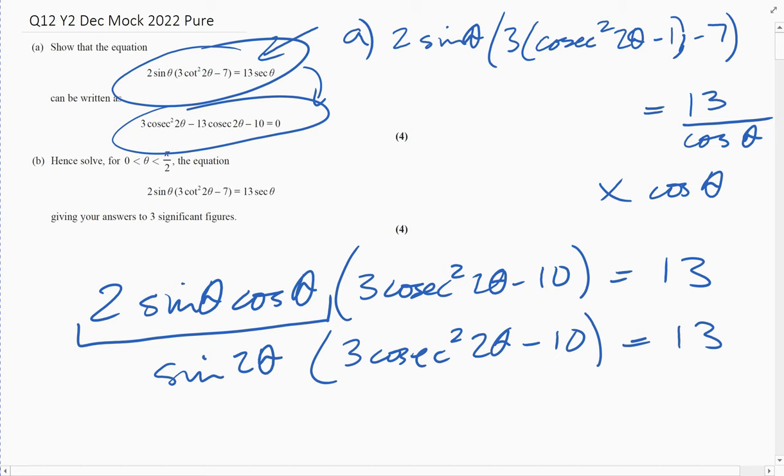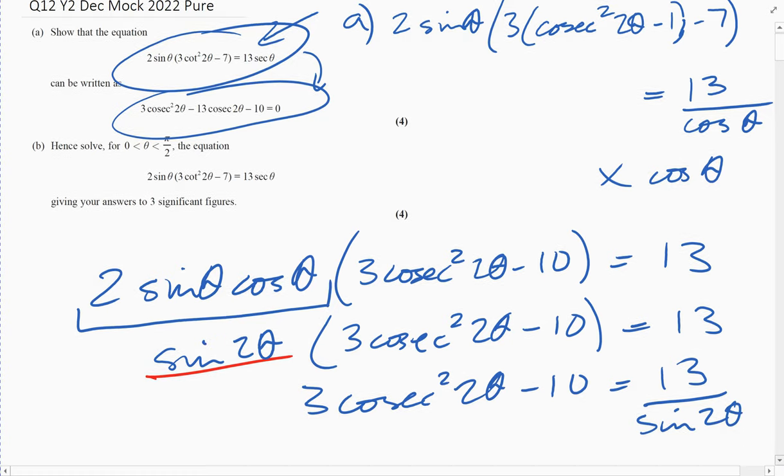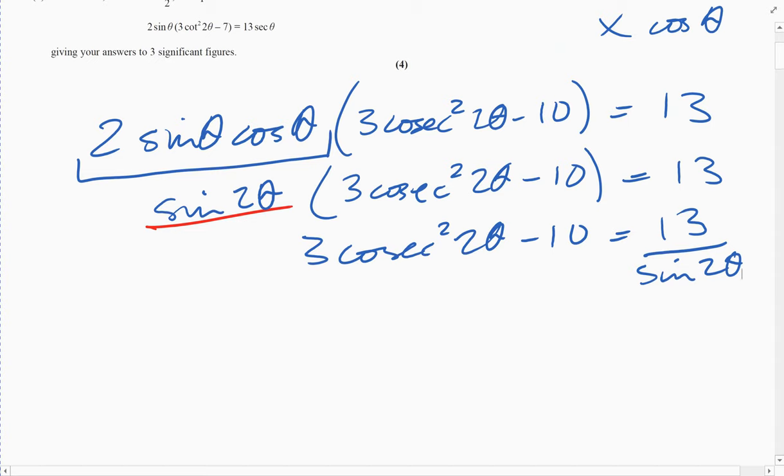Now we need to have all cosec or cosec squared, so let's get rid of this. Put that on the other side: 3 cosec squared 2 theta minus 10 is 13 over sine 2 theta. That's good news because when you divide by sine 2 theta you can just make it cosec 2 theta, so this becomes 13 cosec 2 theta on the right. We just need to get it all to equal zero, so subtract 13 cosec 2 theta from both sides. That's it for part a.